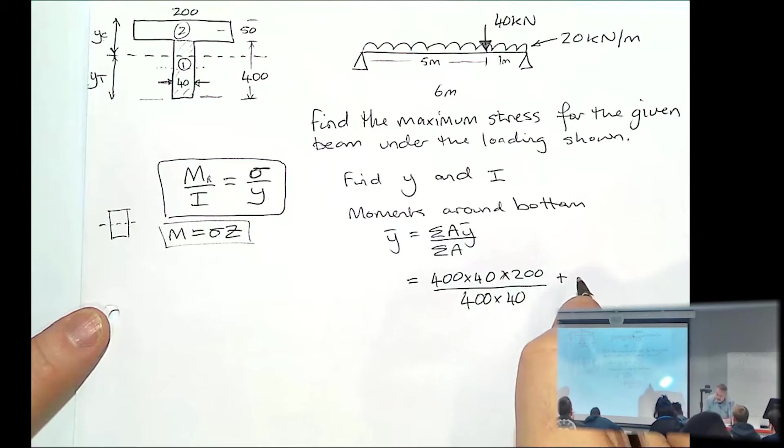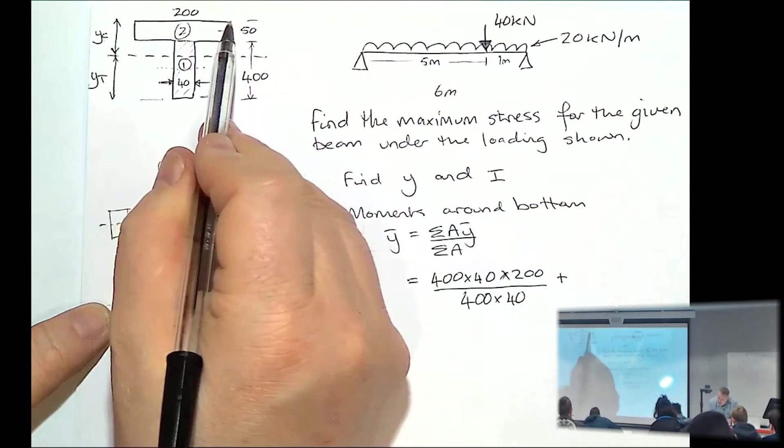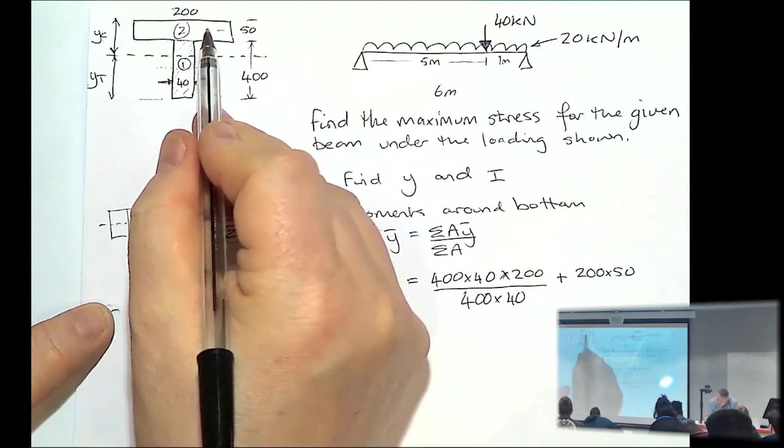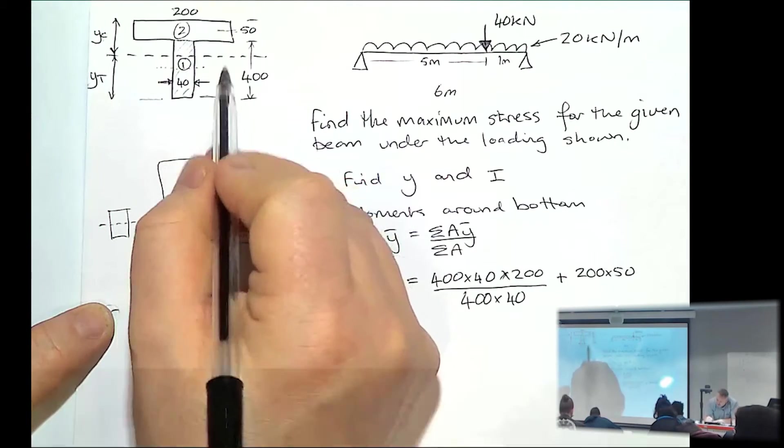And then we add the top part, so it's 200 times by 50. And the distance to the position of its neutral axis, halfway, is 425.